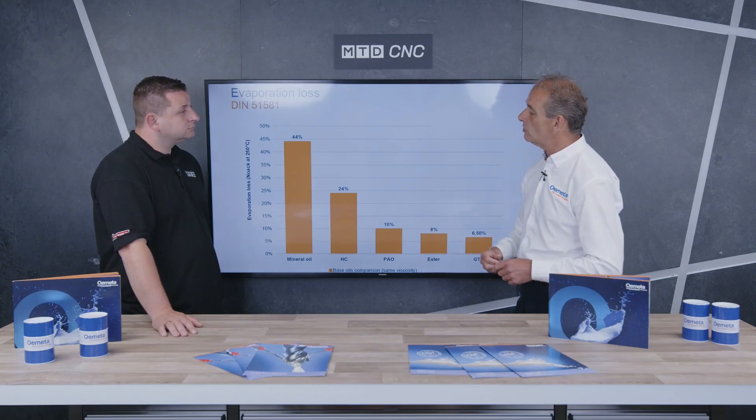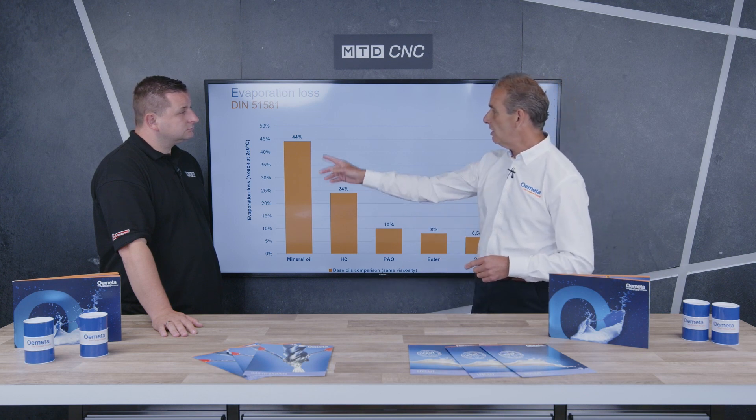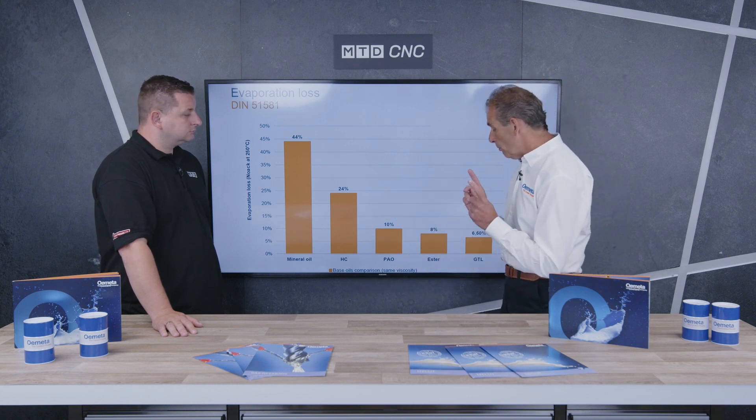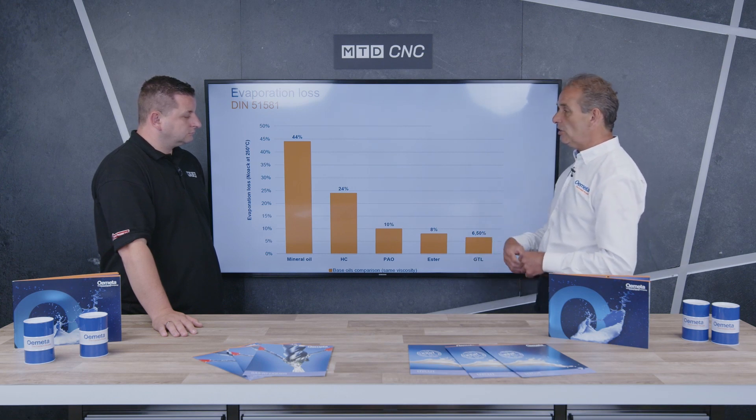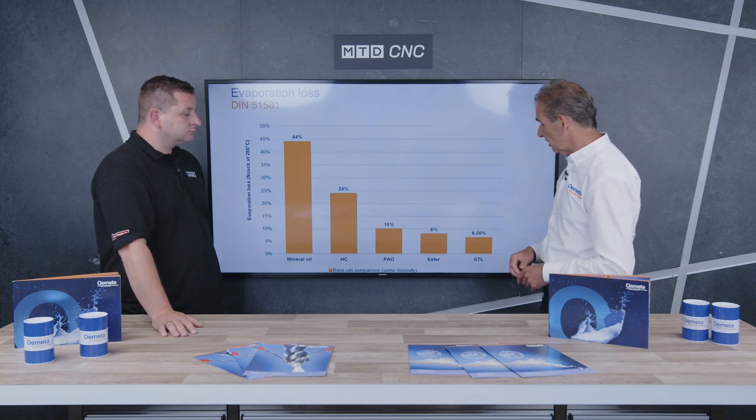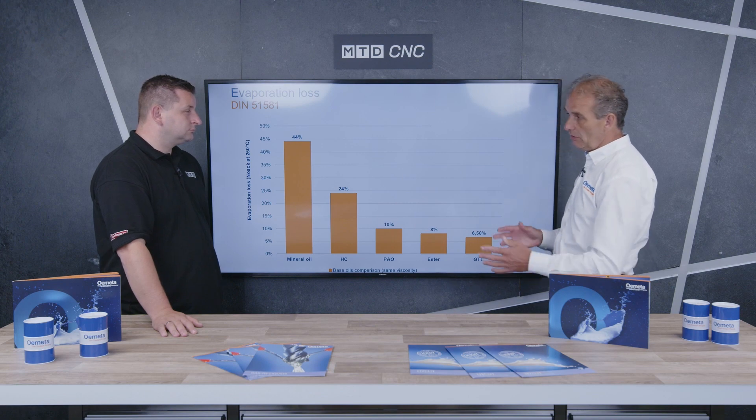Another advantage covers multiple things. The first thing is consumption — the more you evaporate, the more you lose, the more you have to pay to refill. When you take a look at a mineral oil — again, a DIN standard test where we heat an oil to 250 degrees — you can see the evaporation level is 44%. If you move over to the ester oils, you can see that evaporation, or that loss of oil essentially, drops down to 8% and 6.5%. Huge difference — so massive cost saving potential here.